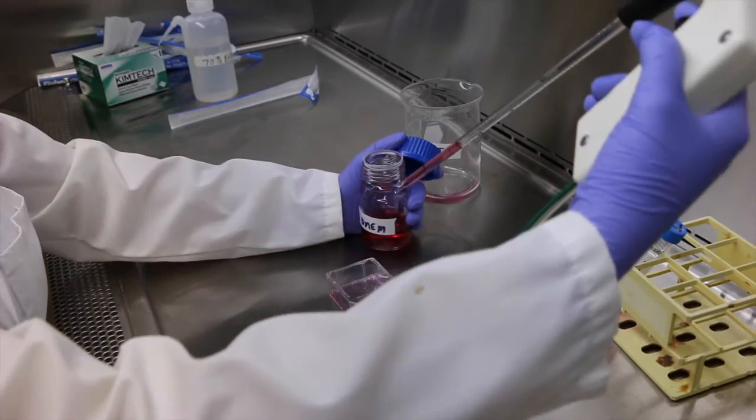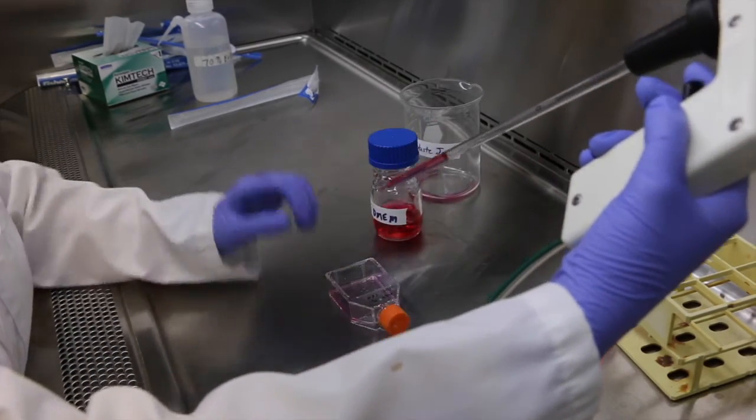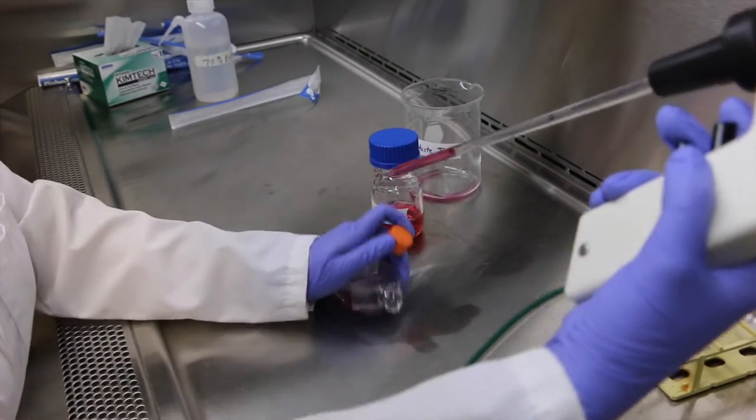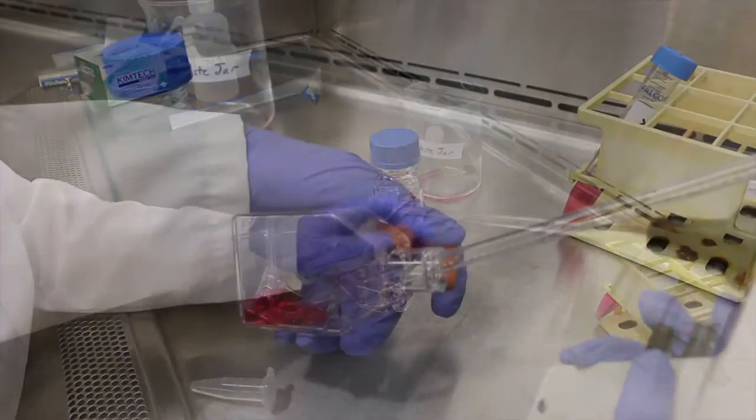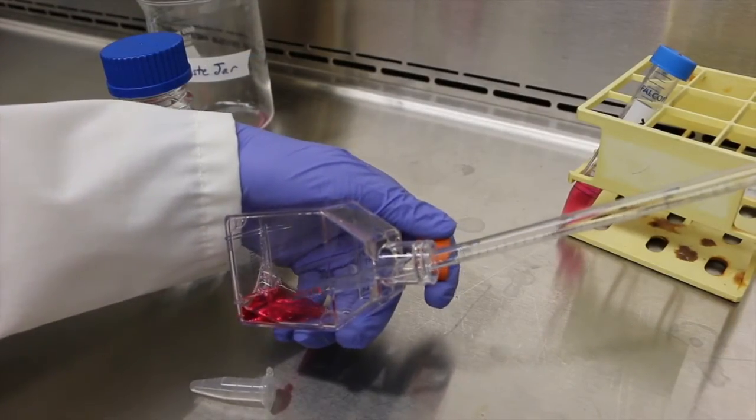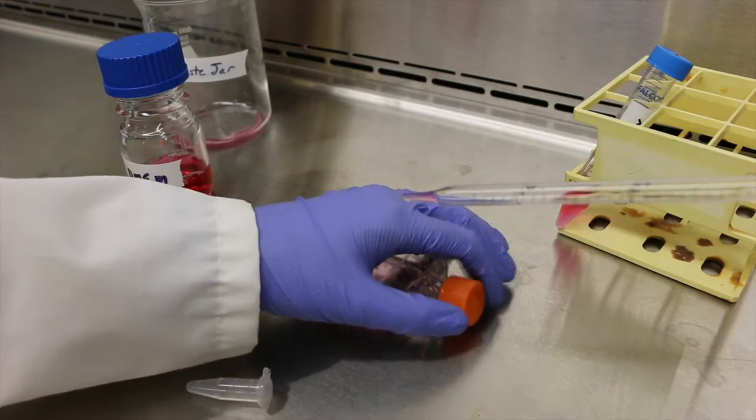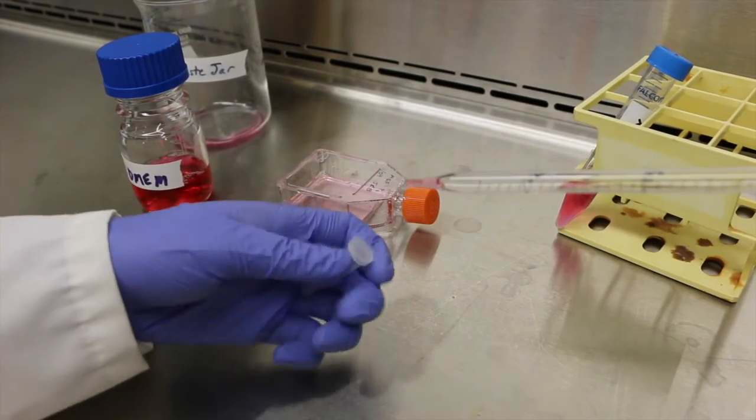Neutralize the trypsin using an additional 2.5ml of growth media. This should bring the total volume of liquid in the flask to 3.5ml. Remove a very small sample of your cells into a microcentrifuge tube to be used for cell counting.